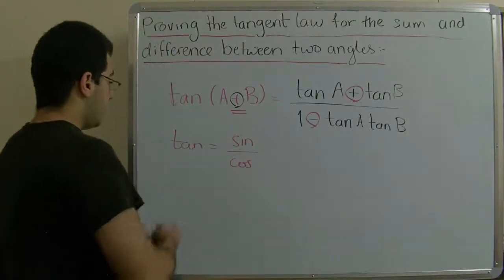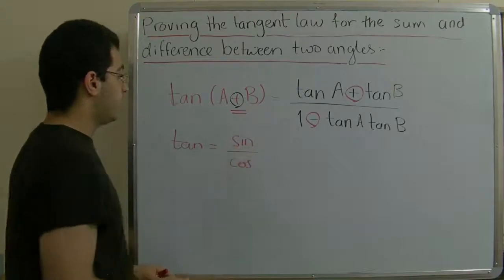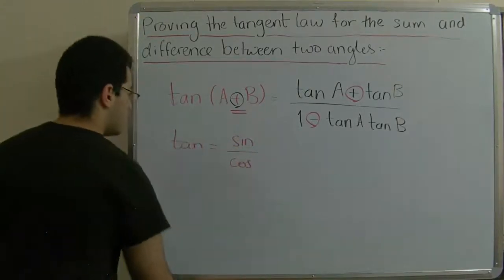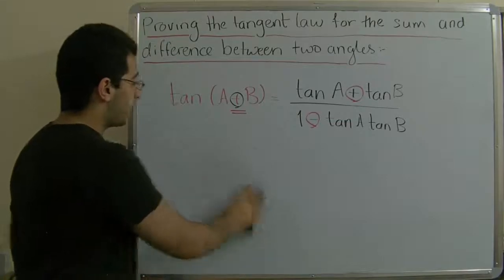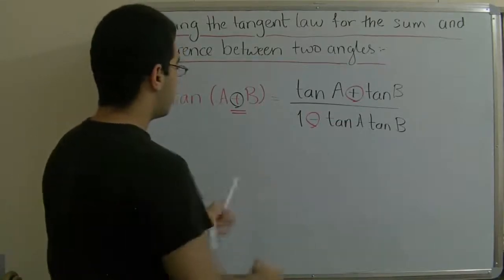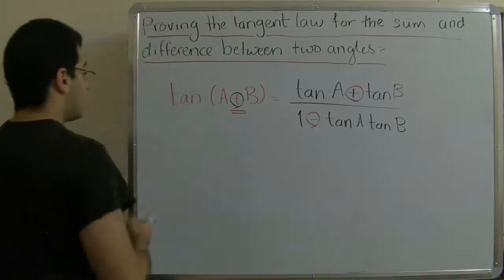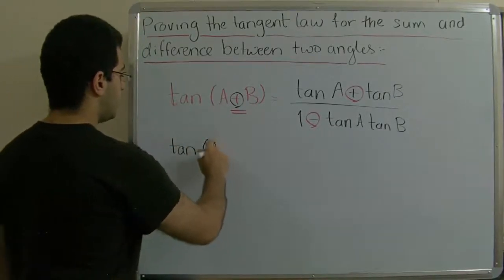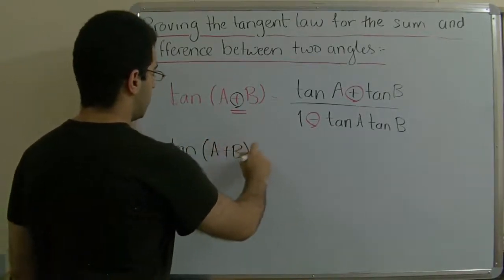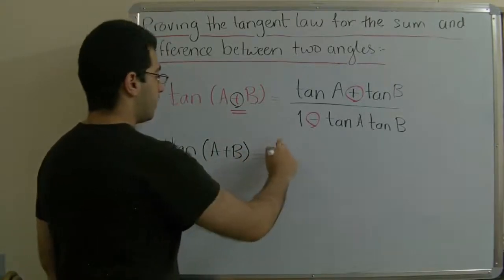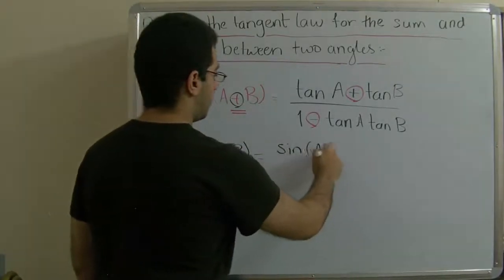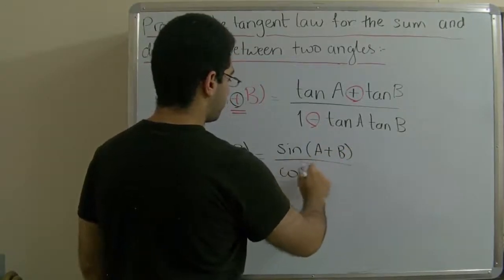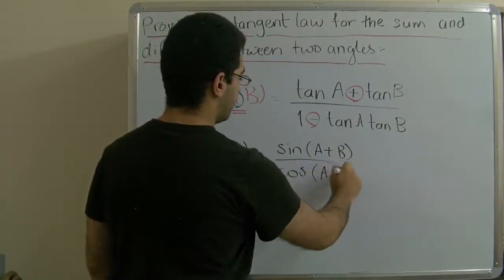Since tangent equals sine over cosine, we can understand where this rule comes from. Tangent of a plus b equals sine of (a plus b) over cosine of (a plus b).